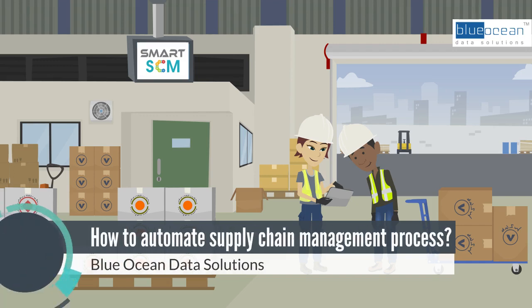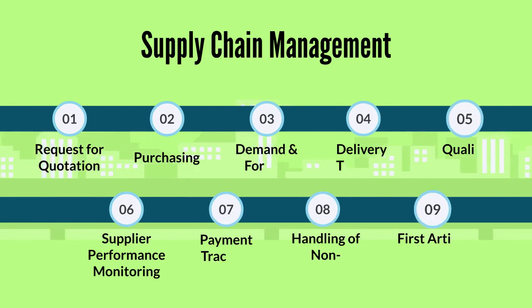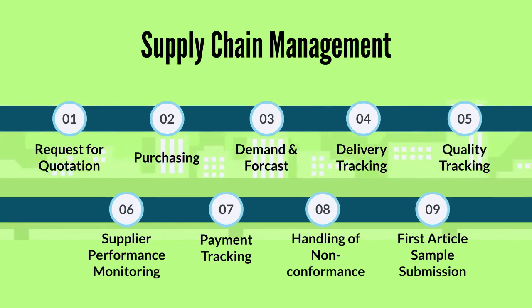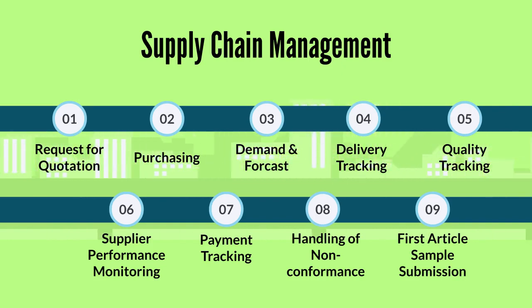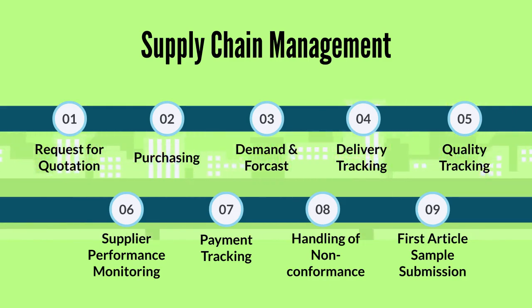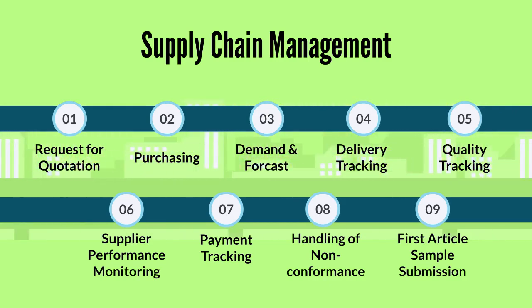How to Automate Supply Chain Management Process. The supply chain management process consists of request for quotation, purchasing, demand and forecast, delivery tracking, quality tracking, supplier performance monitoring, payment tracking, handling of non-conformance, and first article sample submission.